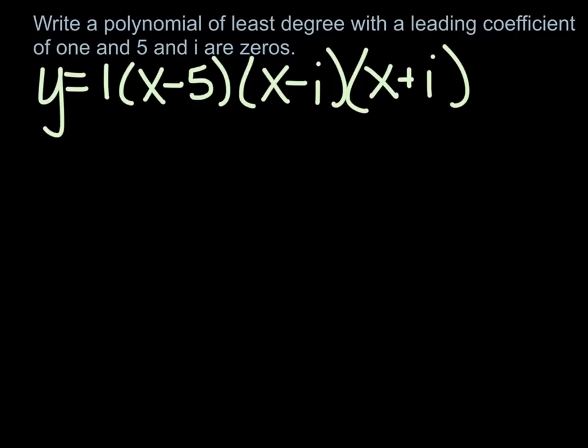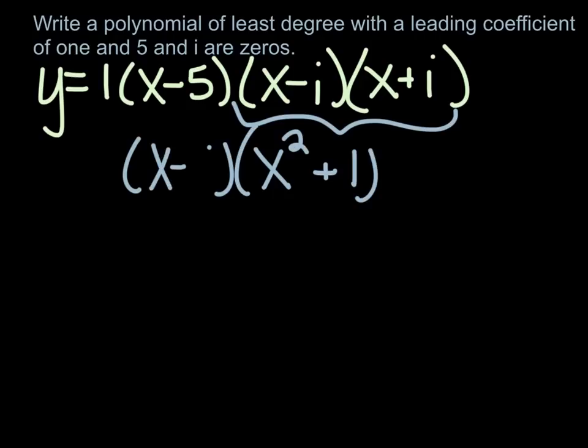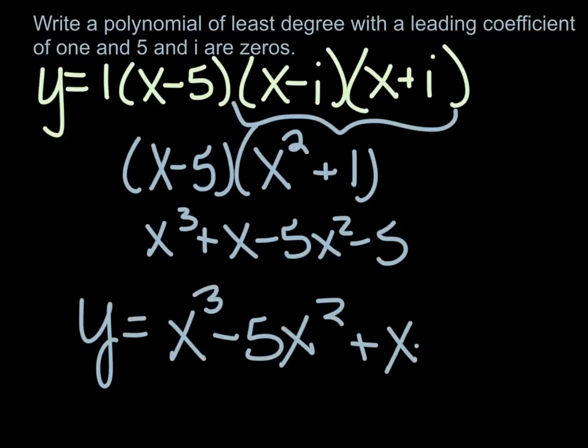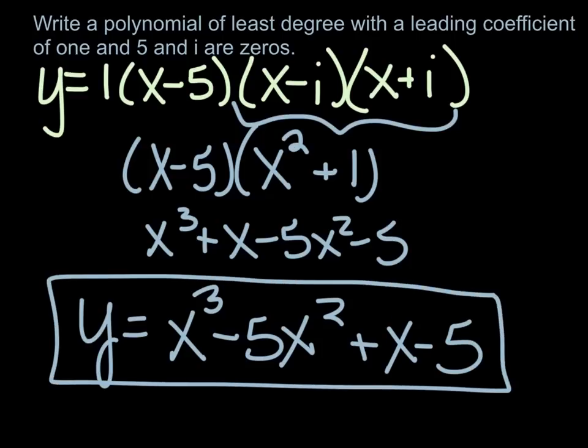Alright, so now we need to multiply this all out. We'll do these together. We get x squared, and then we have minus ix and plus ix go away, and minus i squared is minus negative 1, so plus 1. And then we can foil these guys together, and we get x cubed plus x minus 5x squared minus 5. If we put this in the right form, we're going to have x cubed minus 5x squared plus x minus 5. There's your polynomial of least degree, so we could add more zeros, but we're not, because it says least degree, with a leading coefficient of 1 and 5 and i are zeros. And that's it.